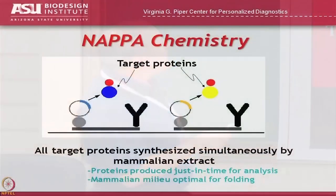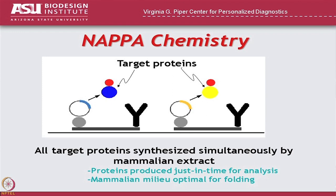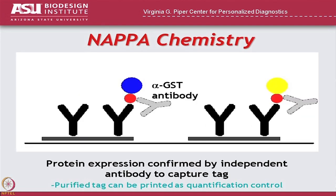This is the idea behind NAPPA. In NAPPA, we print the gene on a plasmid, add cell-free extract that makes the protein — with the protein in blue and the GST tag in red — and we make this at the time of the experiment. The GST is going to get captured by the anti-GST antibody, and now you're displaying the protein on the surface. It flips upside down so that the protein part is what's facing up. Here's an early array printed with eight different proteins, 64 times each.